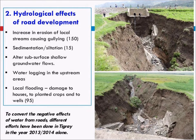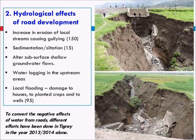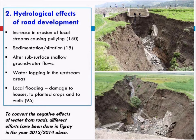The effects we monitored: there is an increase in erosion of local streams — we identified about 150 erosion problems. One example in Ethiopia shows gully development that took place in just one year after road construction. We also identified sedimentation problems in 15 locations, causing farmers to plow their fields three times during the rainy season. Subsurface groundwater flow is also altered, and water logging in upstream areas and local flooding are major problems.